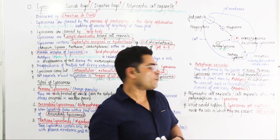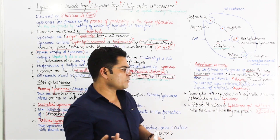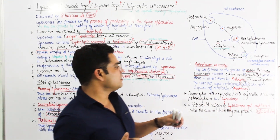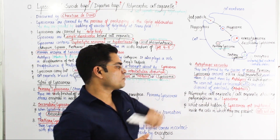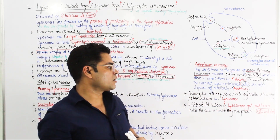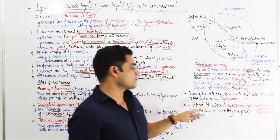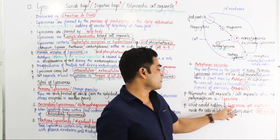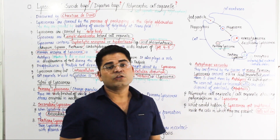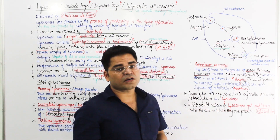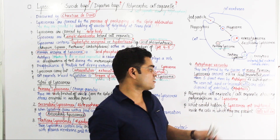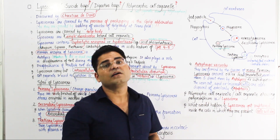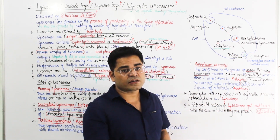Apoptosis occurs when the lysosome ruptures and destroys the entire cell. This is why lysosomes are called the 'suicide bag' of the cell. The lysosome's ability to destroy the whole cell by rupture is the basis for the question about the lysosome as a polymorphic cell organelle.